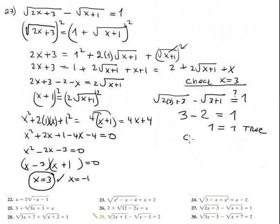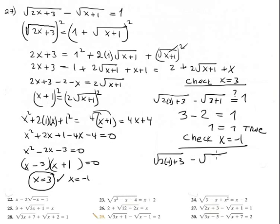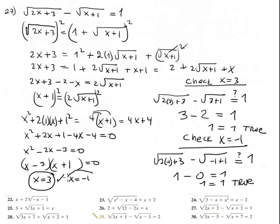Checking x equals negative 1: square root of 2 times negative 1 plus 3, minus square root of negative 1 plus 1, should equal 1. That's square root of 1 minus square root of 0, which is 1 minus 0 equals 1. True — x equals negative 1 is also valid. Both solutions are correct.